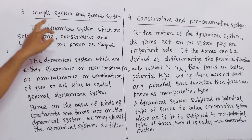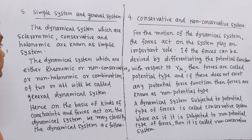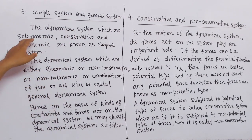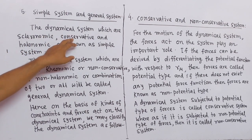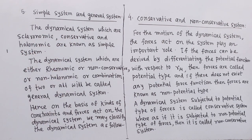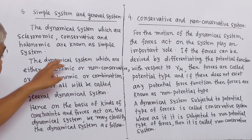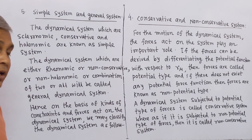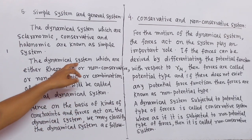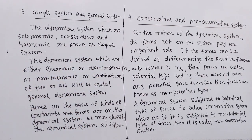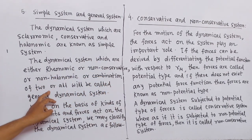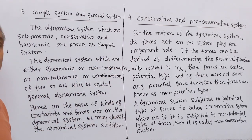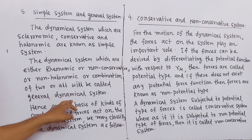Number 5: Simple system and general system. The dynamical systems which are scleronomic, conservative, and holonomic are known as a simple system. The dynamical systems which are either rheonomic, or non-conservative, or non-holonomic, or a combination of two or all three, are called a general dynamical system.